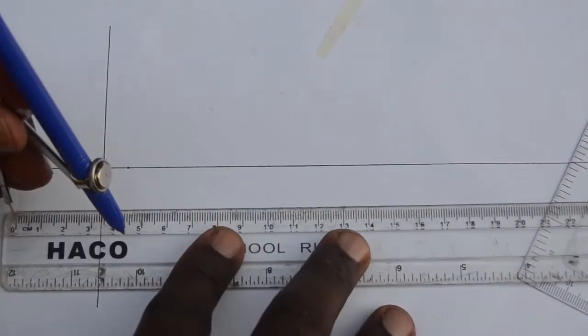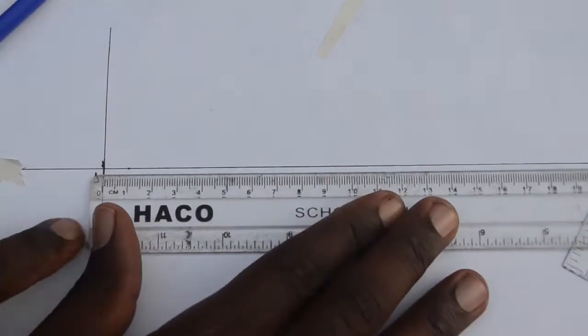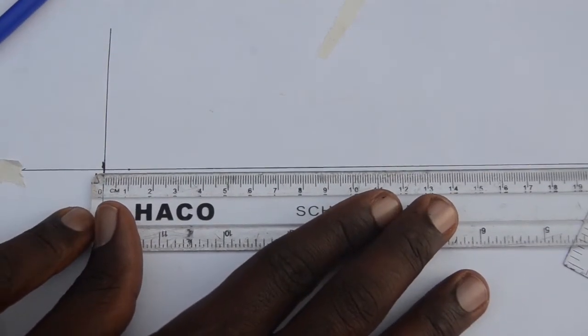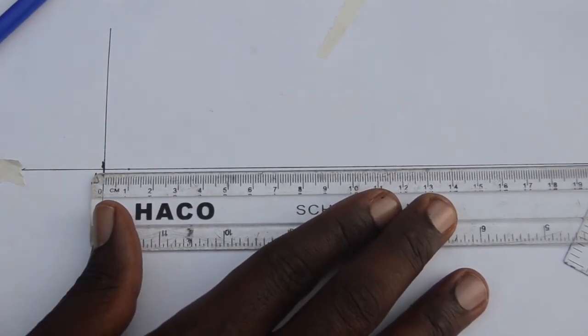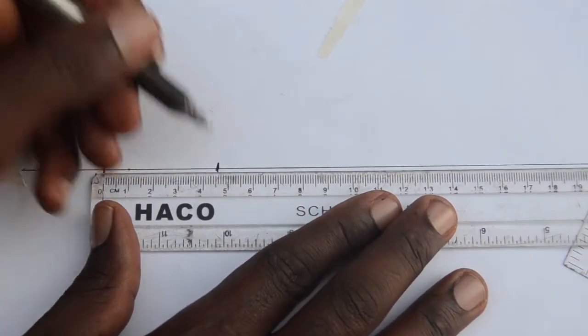We are then going to mark off the focal point using the distance given to us, and in this case the distance is 45 millimeters.